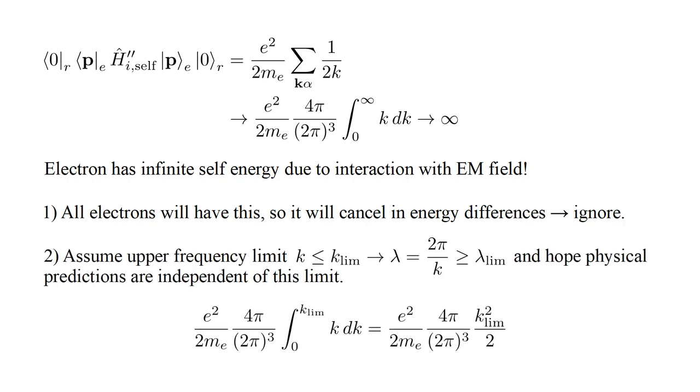Another argument was to note that the infinity is due to the infinite upper limit of the integral. If we assume instead a finite upper frequency limit k-lim, then the integral will be finite. Since wavelength is two pi over k, this is equivalent to setting a smallest wavelength limit. If the physical predictions this leads to are independent of this limit, then the problem goes away.